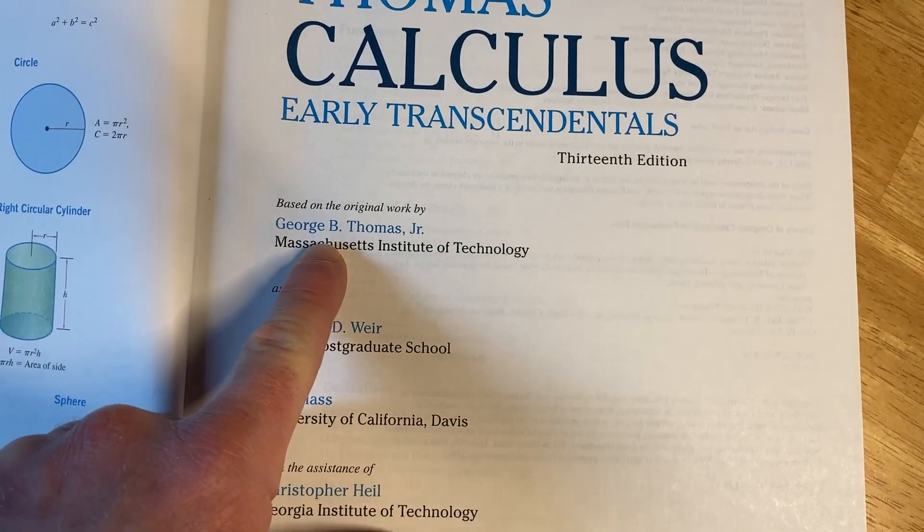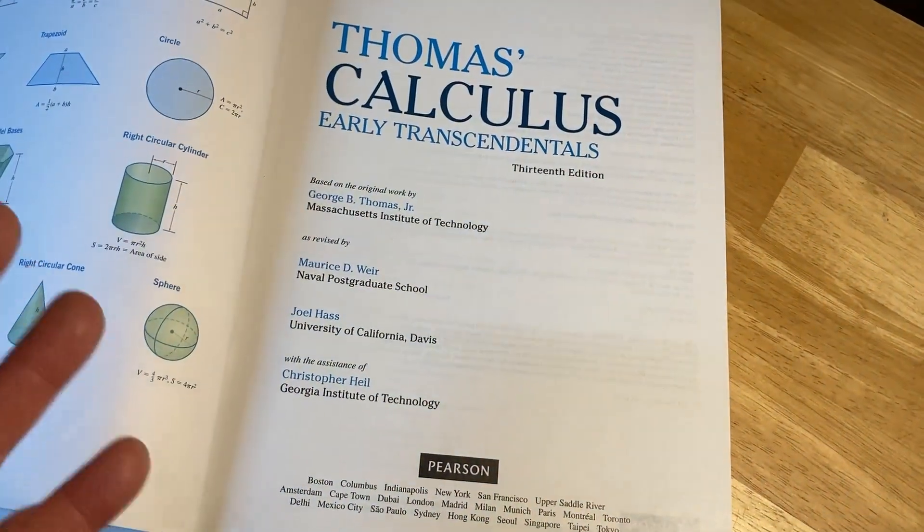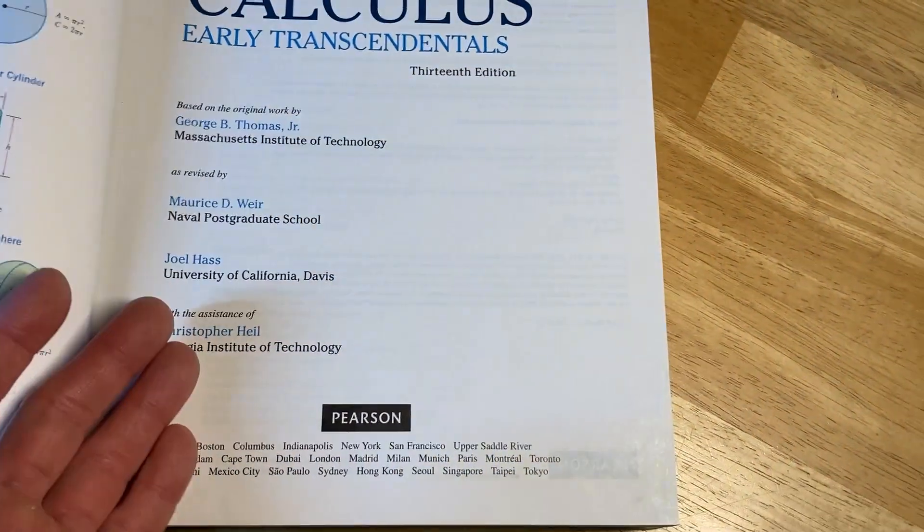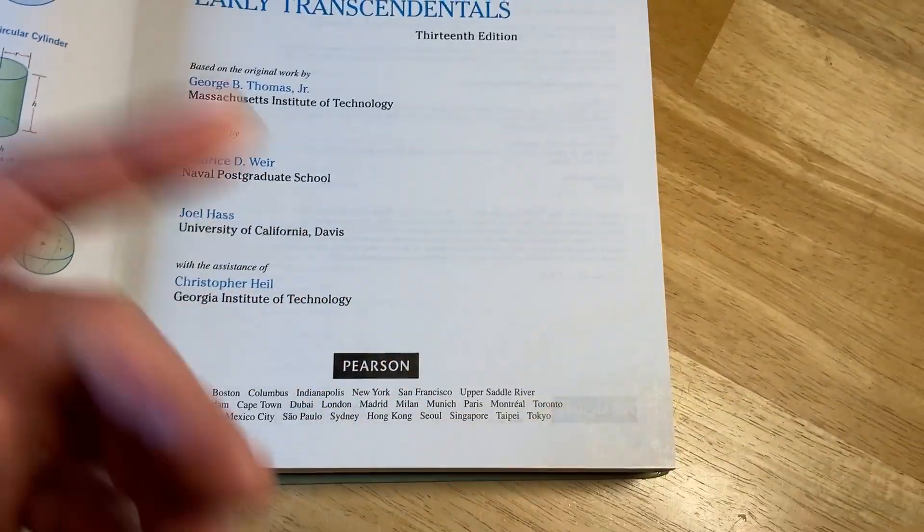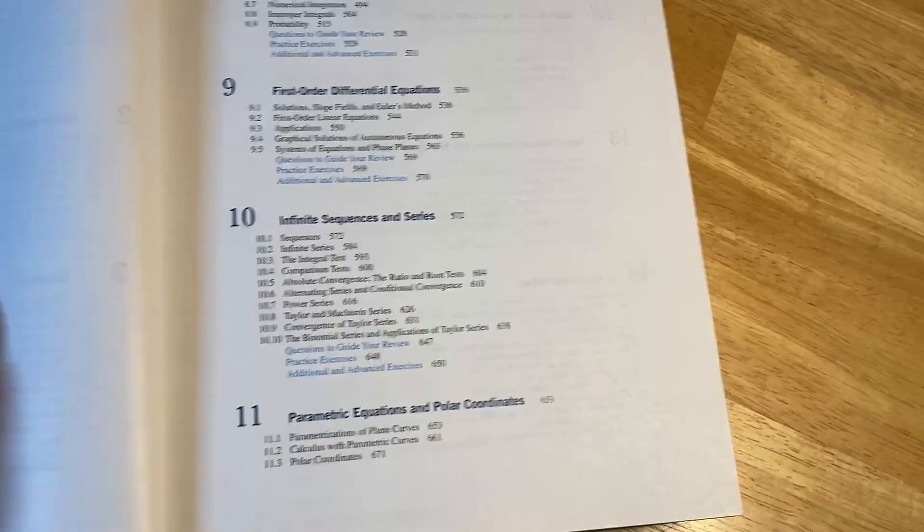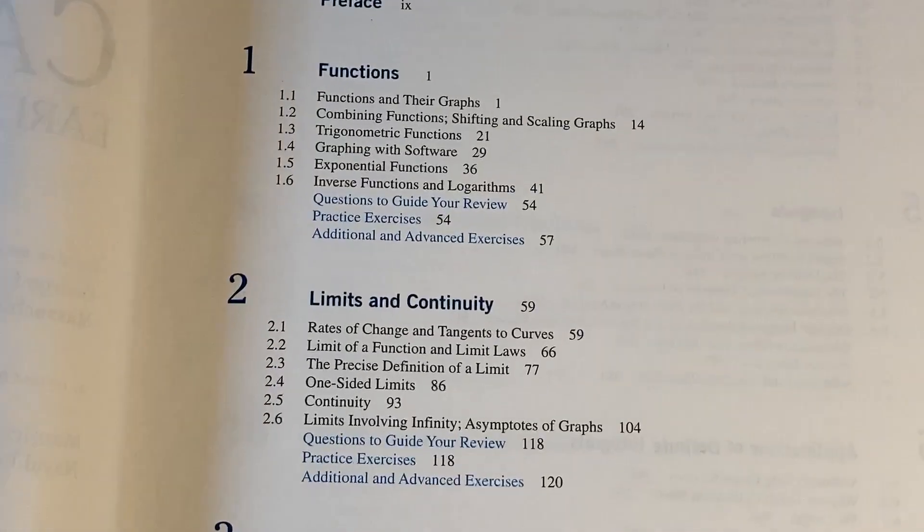And you can see here based on the original work by George B. Thomas Jr., MIT. So he wrote this legendary book called Calculus and it was so good. It was so popular that even to this day, these people here have been revising it and working through it. So this book can be used to learn everything that you would learn in Calculus 1, 2, and 3, at least in the U.S. if you went to college.